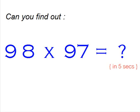I think the time is up. The answer is 9506. Well, those who could not calculate, don't get disheartened because you know that you just have to learn this trick and then you'll be able to multiply any numbers that are closer to base 100 in less than five seconds.